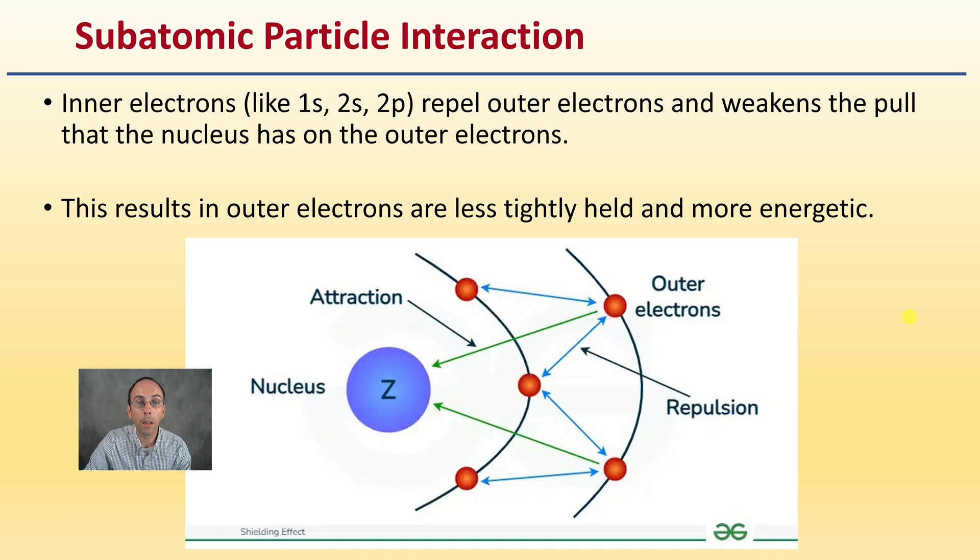This results in outer electrons being less tightly held and more energetic. You can essentially have those inner electrons shielding or blocking the positive charge of that nucleus from those outer electrons. This reduction in charge is what's called the shielding effect. These inner electrons are interrupting that direct connection between the negative charge of the outer electrons and the positive charge of the nucleus.